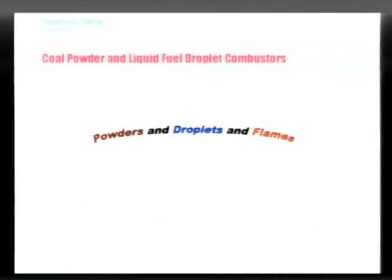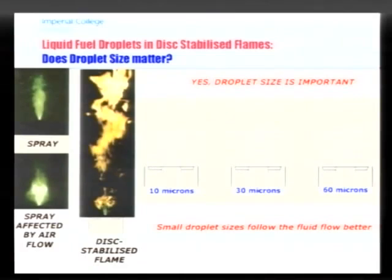We throw the dice again, and this time what comes out is everything - powdered droplets and flames. This is related to measurements in coal powders or liquid fuel flames. This is an example of measurements with phase Doppler of the spray introduced with no other air flow. This is the spray introduced in the wake of a disc, and this is the resulting flame. If you measure the droplet sizes, you find that small droplets actually follow the flow, while if you increase the size, they follow less and less the vortices that are present. So droplet size is important.